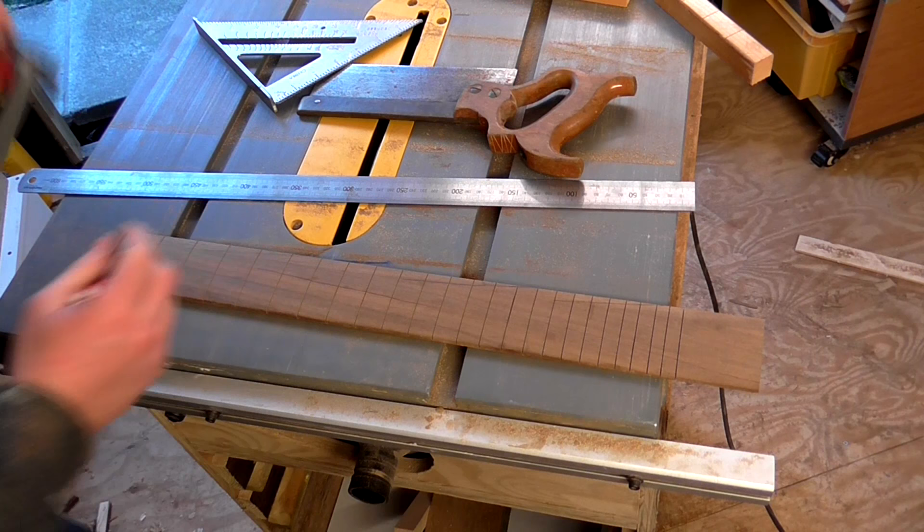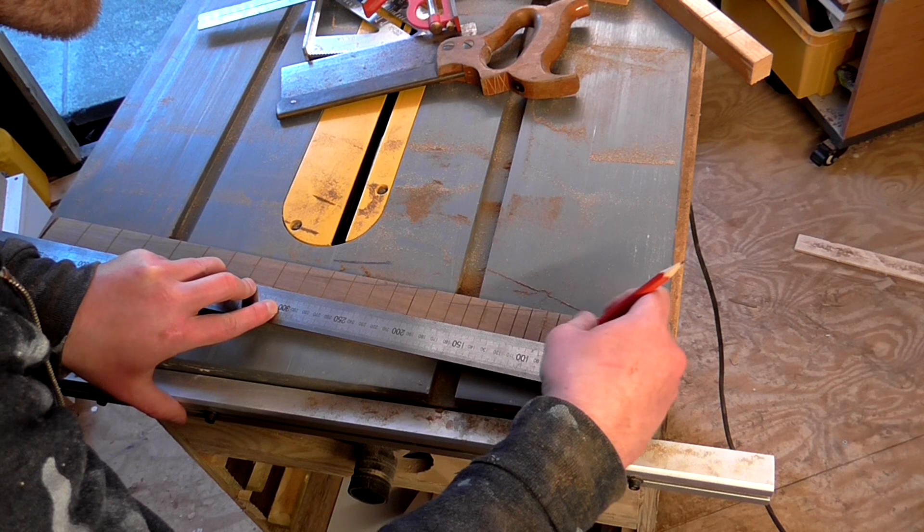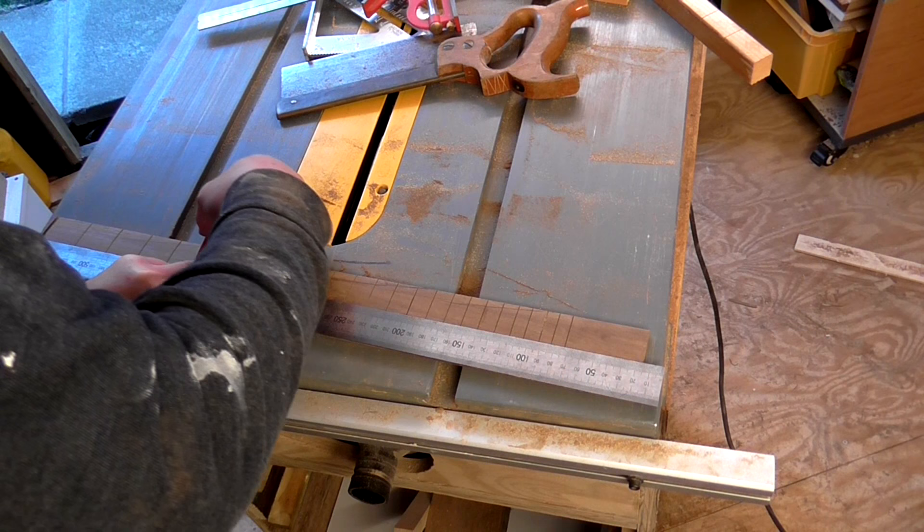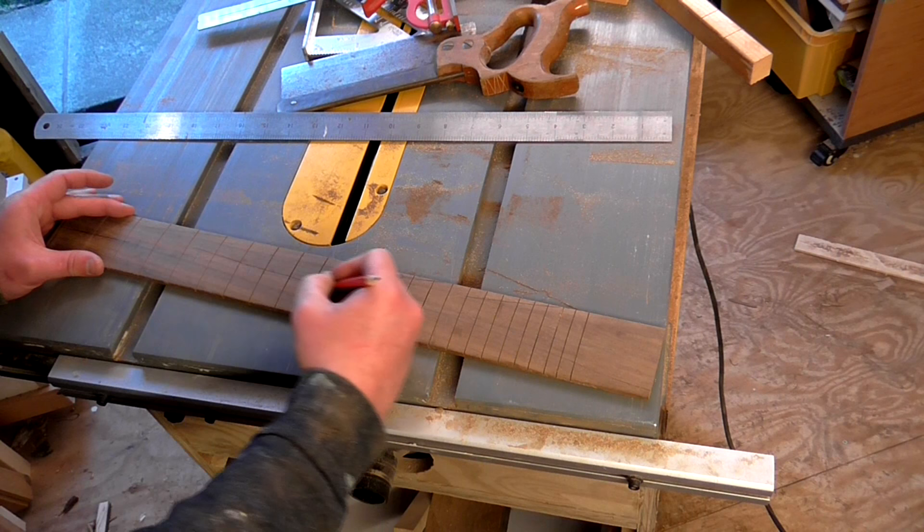Next I marked up the center point of the neck at both ends and joined the two marks with a line. Then I could mark up where the fret markers would go on the 3rd, 5th, 7th, 9th and 12th frets and so on as is tradition.